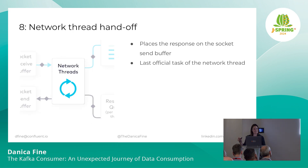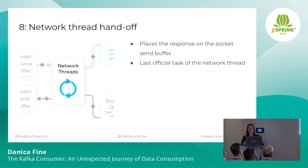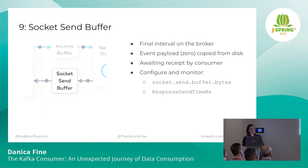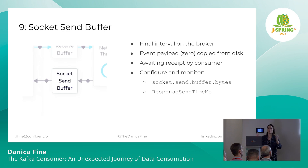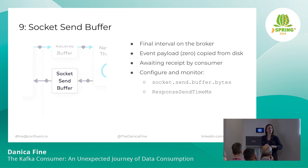Back to the network threads — they've been with us the whole time, just like Gandalf. At this point, it's time for the network threads to pick up that generated response and send it back to the consumer client. That outgoing response is then copied to the socket send buffer to await being received by the consumer. There's a lot of data always in movement in the brokers between incoming requests and outgoing responses. Kafka is actually zero-copying this data from disk or from the tiered fetch threads when it comes in from tiered storage — doing a zero copy wherever it can to avoid moving too much data at once.